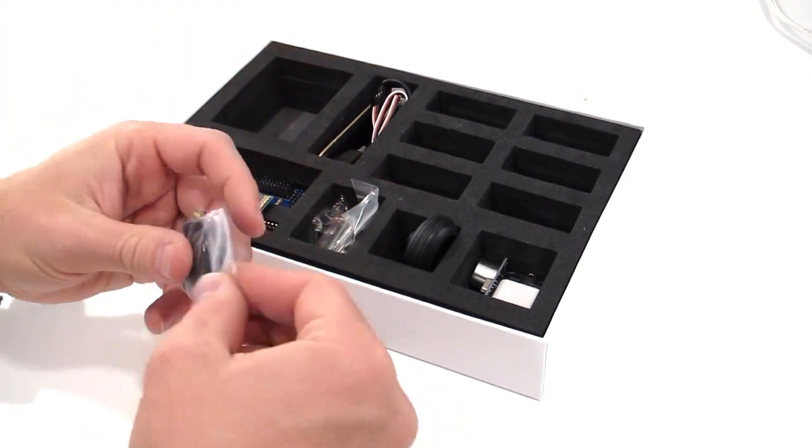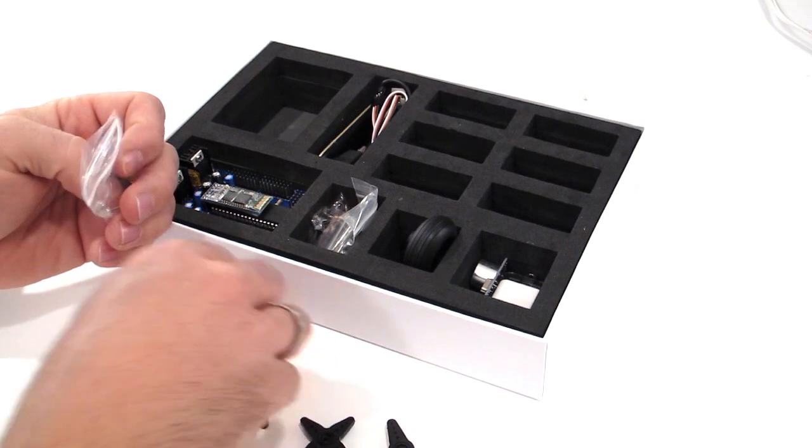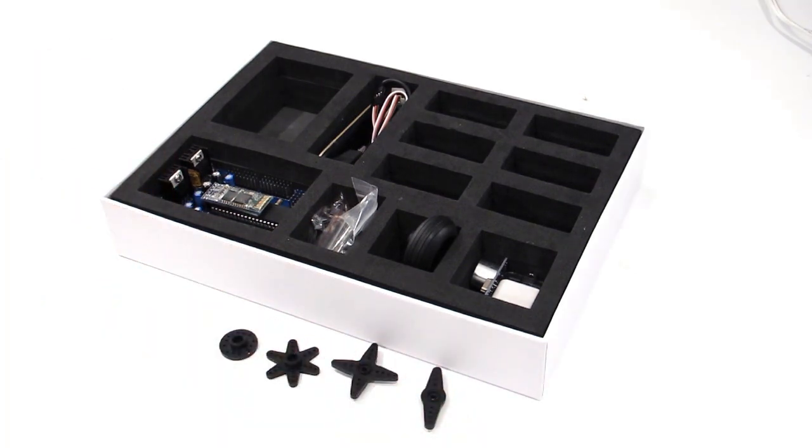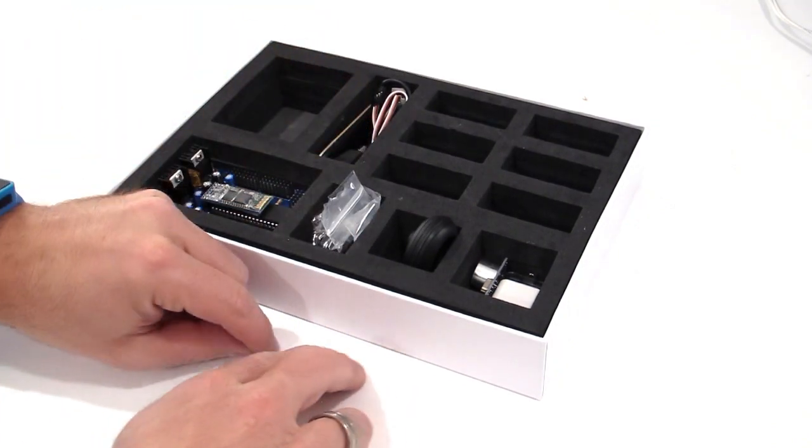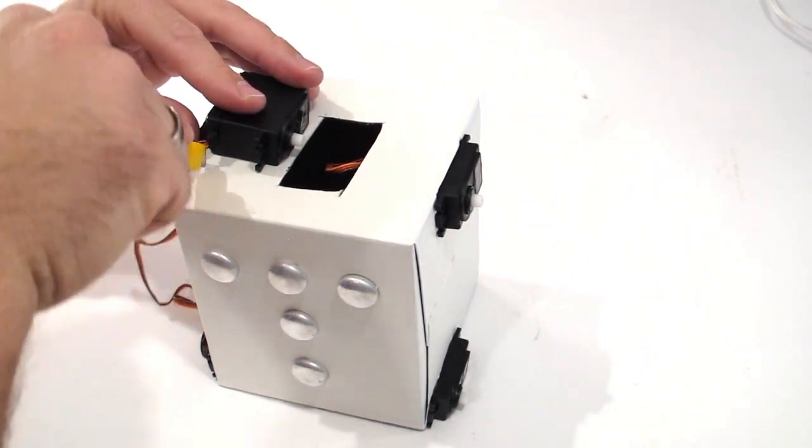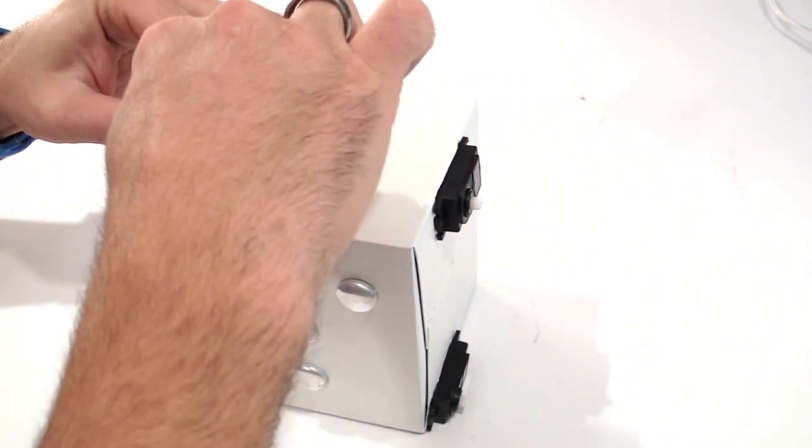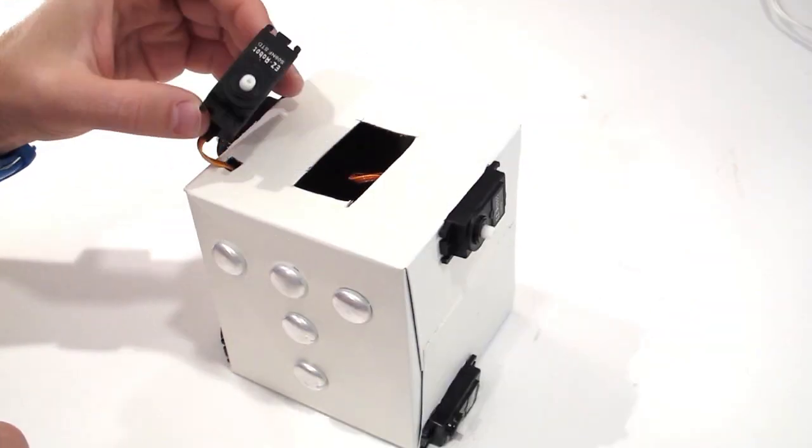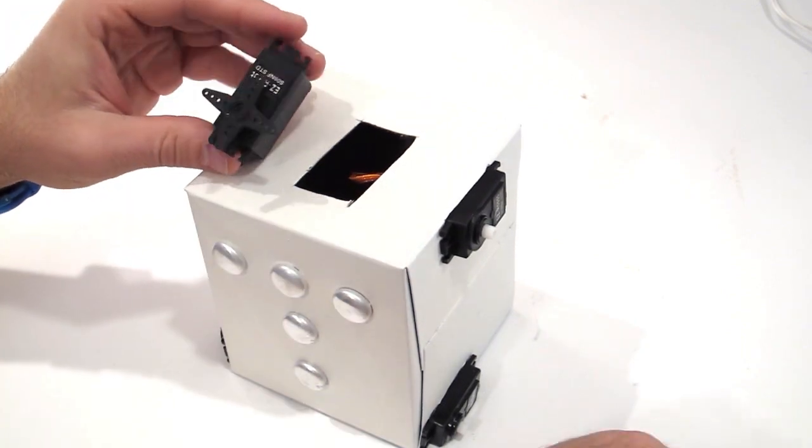In your EasyRobot complete kit, remove the servo attachments and one black screw from one of the baggies. Keep only one screw and the four sided servo attachment. Mark the position of the horizontal servo and cut a small hole for the wire to go through the box. Attach the four sided servo attachment to the servo with the black screw.